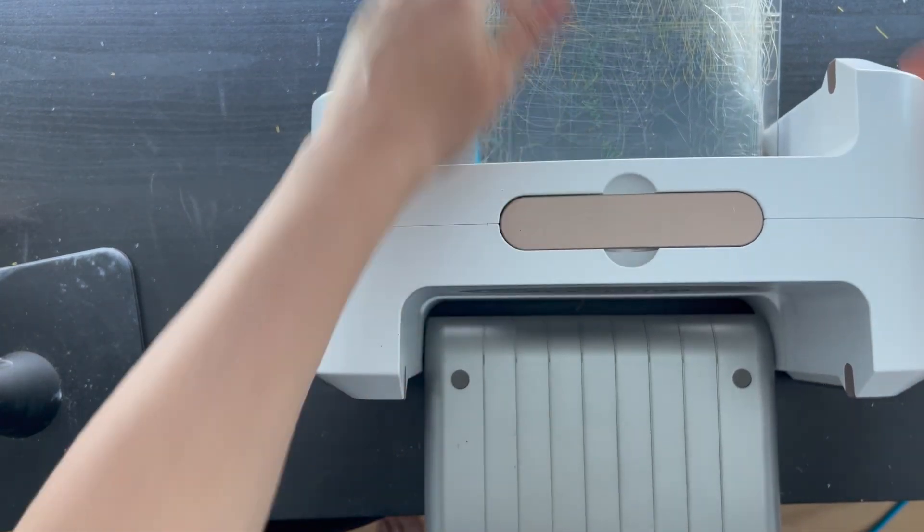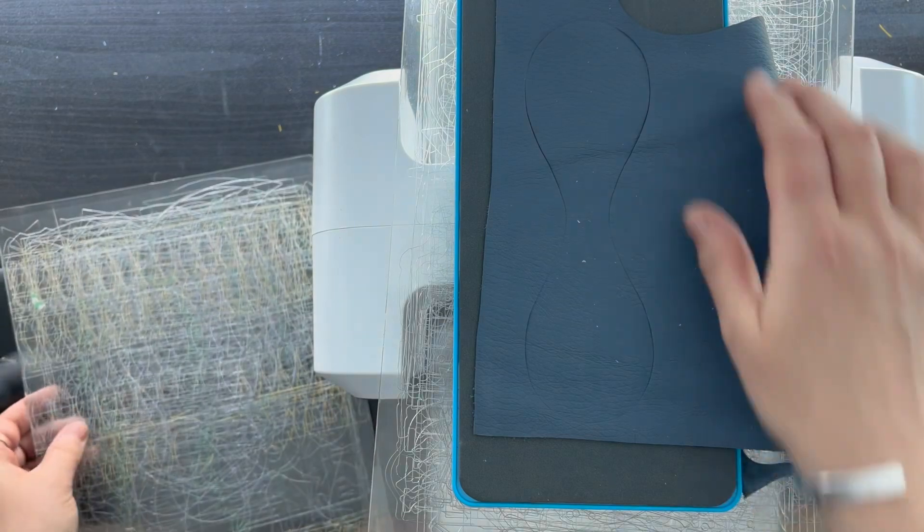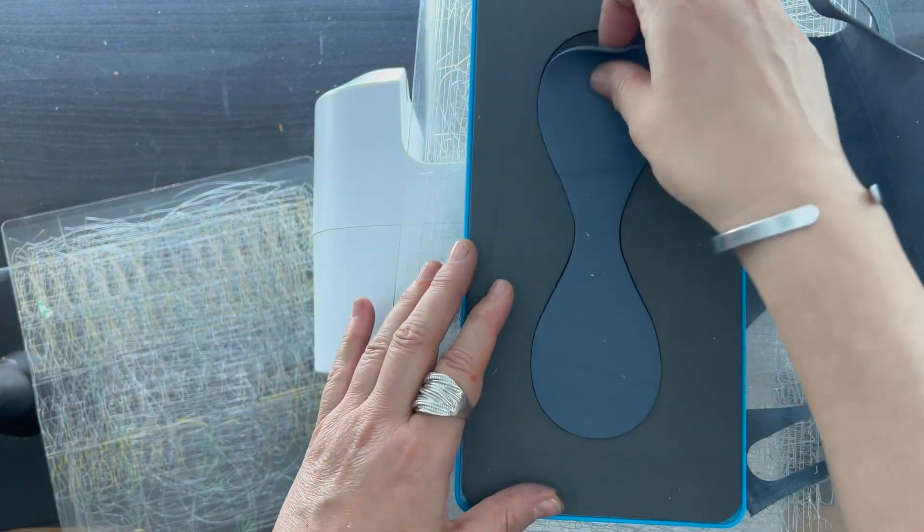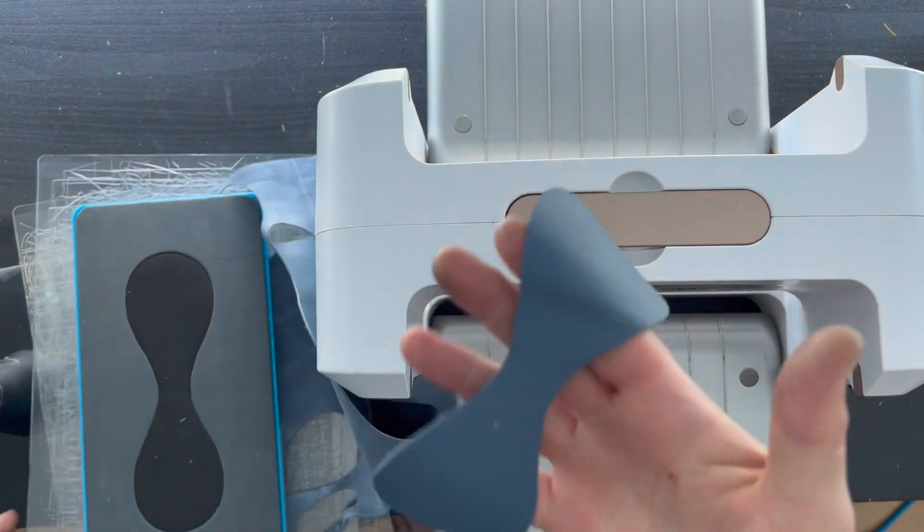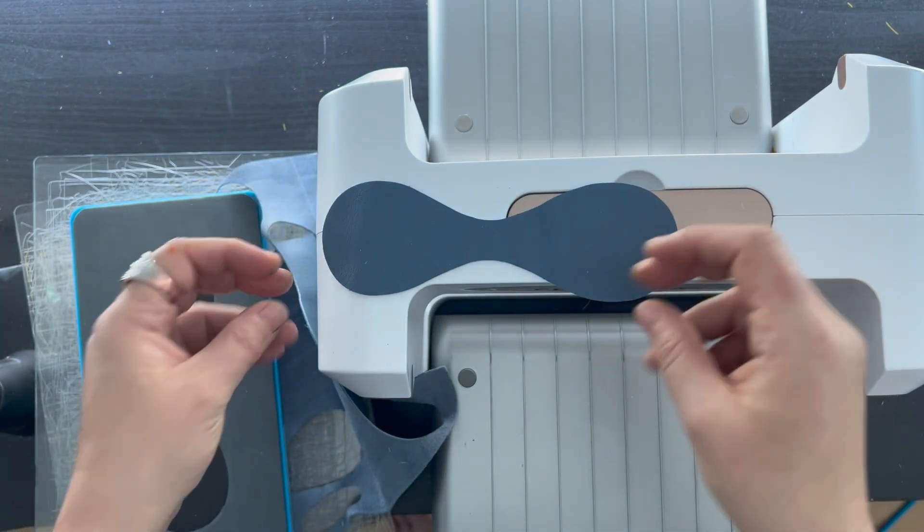There we go. Here's my die cut leather keychain. You can see the shape, it's quite nice. This steel rule die cuts thick materials so you're safe.